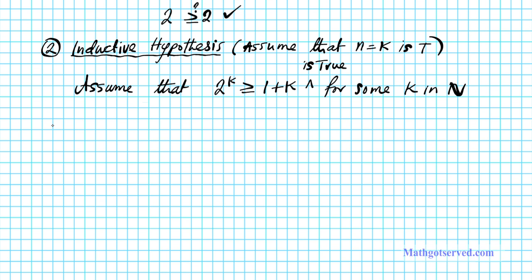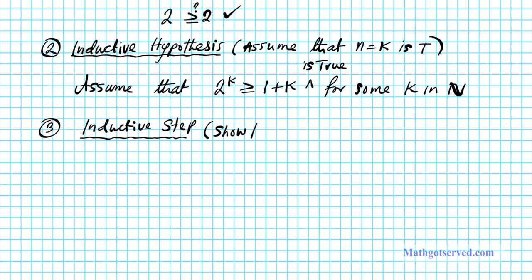Now for the inductive step: based on the inductive hypothesis, we want to show that n equals k being true implies that the next step, n equals k plus 1, is also true. If we can accomplish that, we're done with the proof. So we'll start with the left side and consider the next term, which is 2 to the k plus 1 — advancing to the next integer after k.